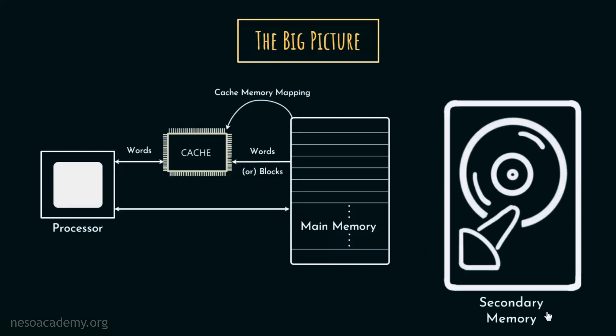If we talk about the type of data that are generally stored in secondary memory — starting from the operating system, which actually manages the entire system for us, then we have other system softwares like device drivers, various application programs, images, audio files, videos, games, documents — you name it. We store almost everything in the secondary storage.